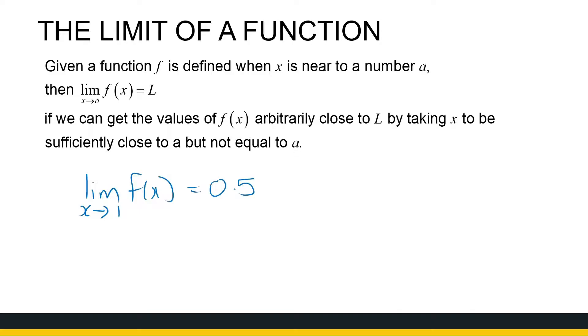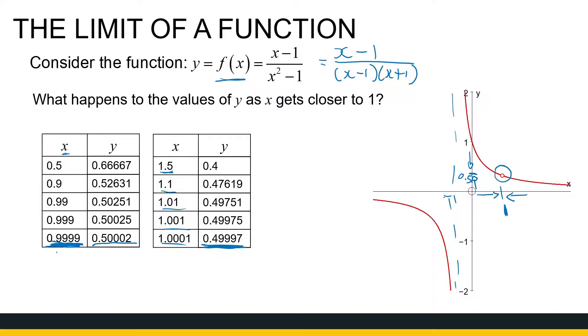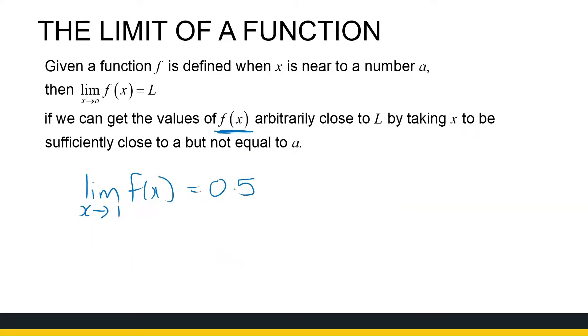If we can get the values, the y values, arbitrary close to 0.5, which we did, we can choose x values even closer to 1 and we'll get y values that are even closer to 0.5. So, if we can get the y values arbitrary close to 0.5, by taking x to be sufficiently close, but not equal to a.